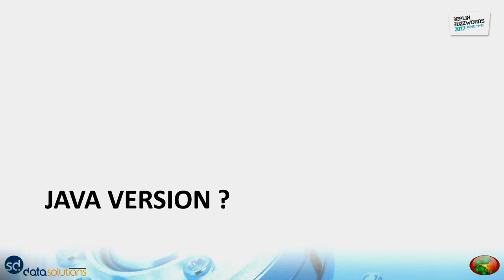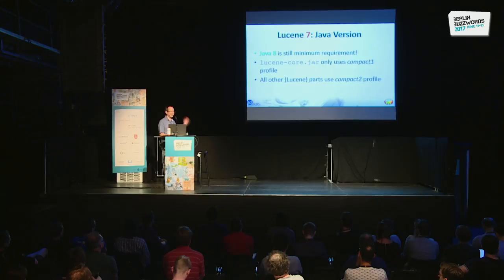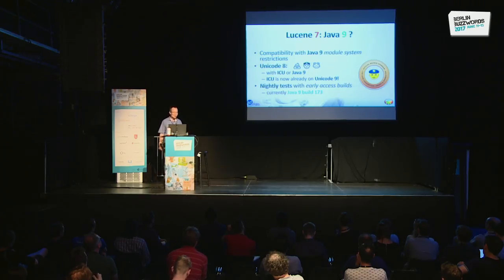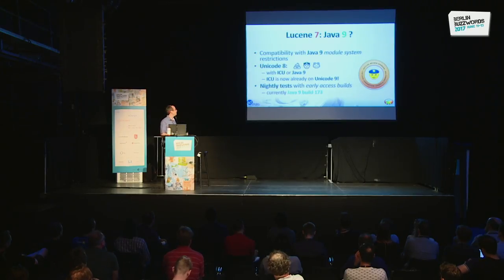Regarding Java version, do not expect any changes — Java 8 is still the minimum requirement. Unfortunately Java 9 did not come out as early as we would like. However, Lucene 7 is compatible with Java 9 and works with the module system restrictions, so you can run Lucene, Elasticsearch, and Solr without the kill switch that is unfortunately now enabled by default in recent Java 9 builds. We are doing nightly testing with build 173.